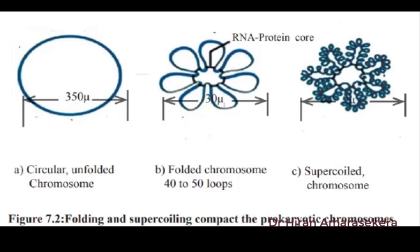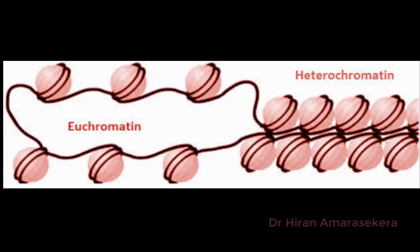Now shifting to eukaryotic cells — the cells that make up our bodies — the packaging gets even more elaborate. There's way more DNA, and it's all tangled up with histone proteins. This gives us chromatin: the complex of DNA and histone proteins in the nucleus. There are two main forms. Euchromatin — 'true chromatin' — is loosely packed and gene-rich. That's where the action is: where genes are being transcribed, meaning information is being used to make RNA. It's like the open book of DNA, ready to be read.